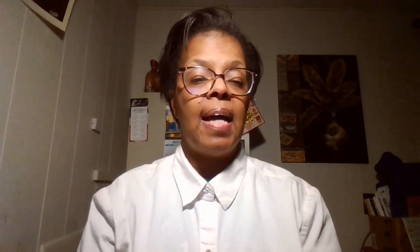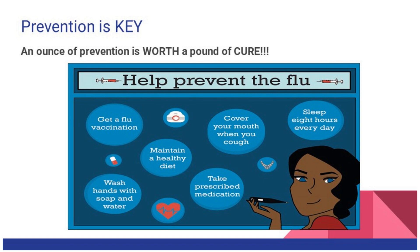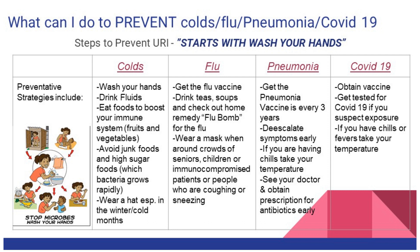Prevention: rest and drink lots of fluids to flush out bacteria or virus. Get the flu vaccine annually. De-escalate symptoms early — before pneumonia becomes pneumonia, it usually starts with flu or cold symptoms. For COVID, get the COVID vaccine and rest.